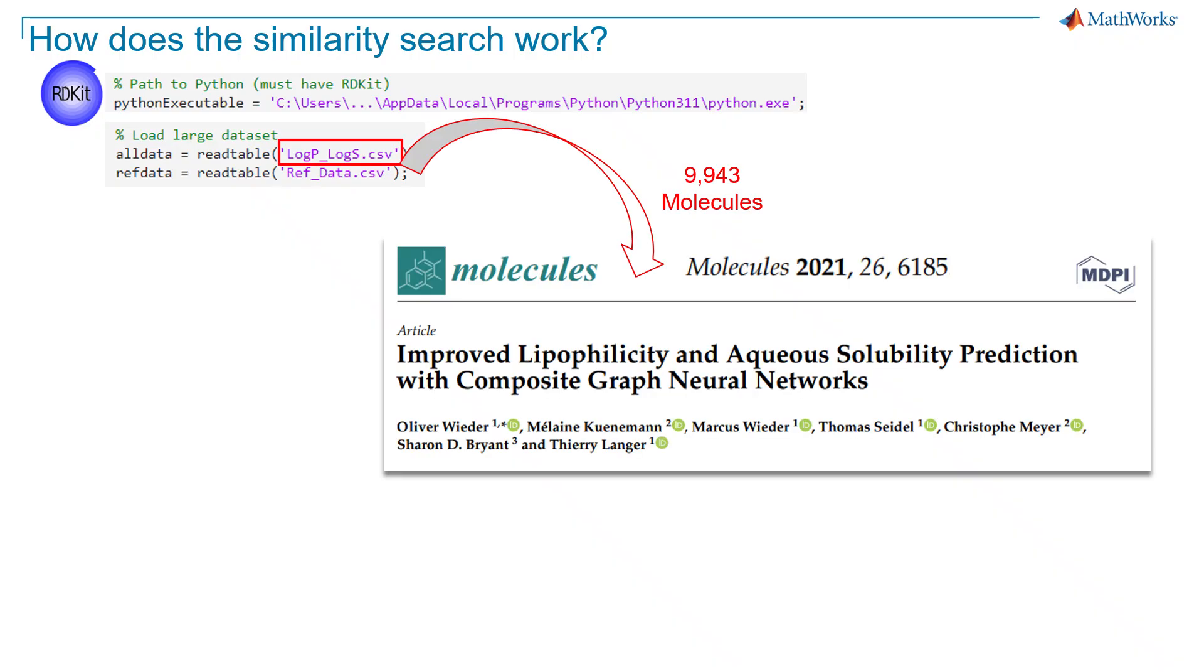This is how this code works: You first provide the path to Python with RDKit installation. We load our main target dataset that we are going to search in. We also load the reference dataset which has three known gliflozins in it. The dataset that we are searching in is the same dataset that we used before - it has almost 10,000 molecules in it, and you can obtain it from this paper and cite this publication for it.